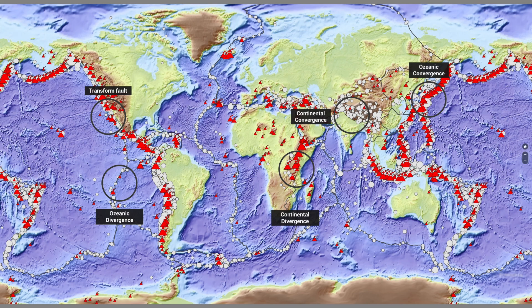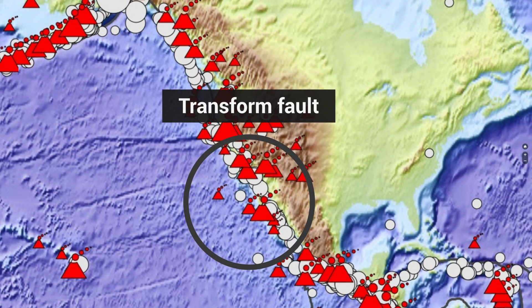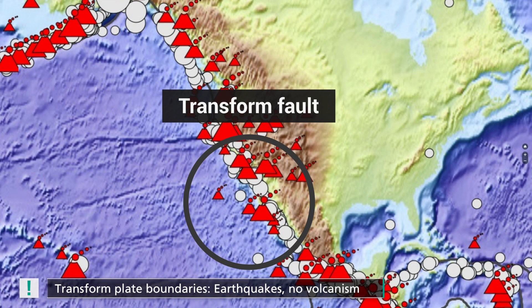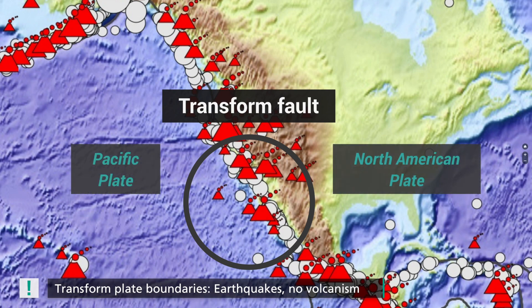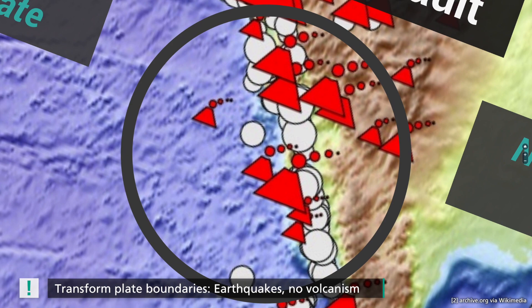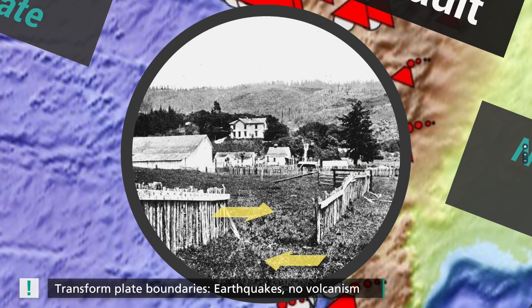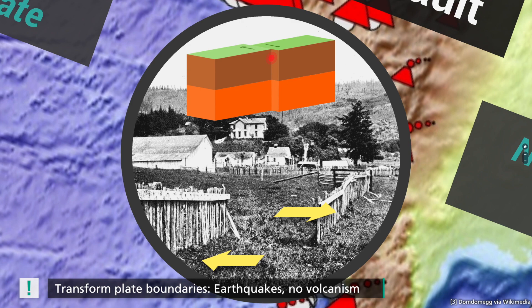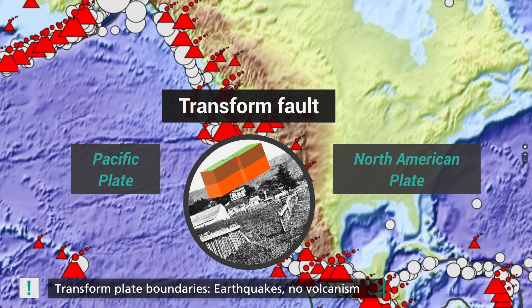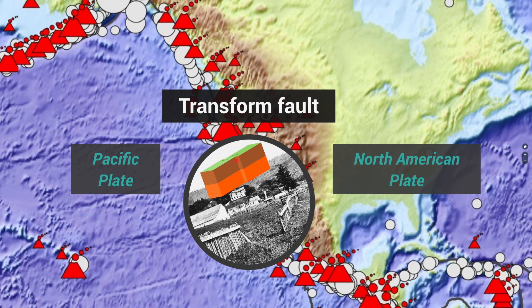The first place we are looking at is California, where earthquakes regularly occur due to a transform fault between the North American plate and the Pacific plate. Shown here is a fence that has been shifted horizontally by about one meter after the 1906 San Francisco earthquake, which occurred along the San Andreas Fault. Generally, volcanism does not occur along transform plate boundaries.